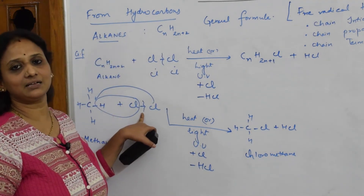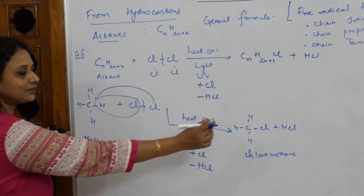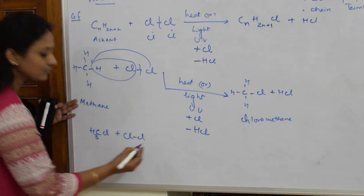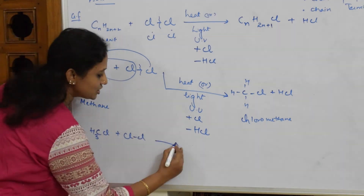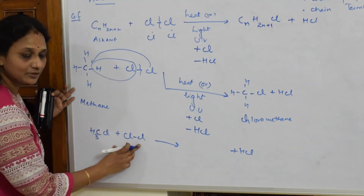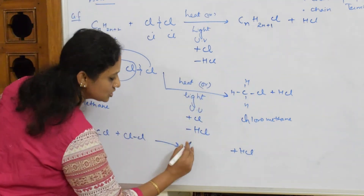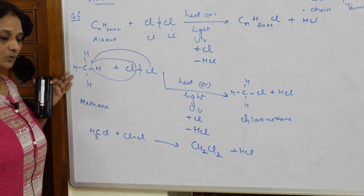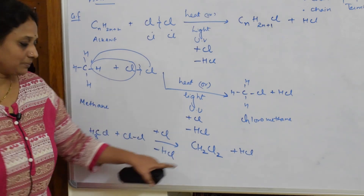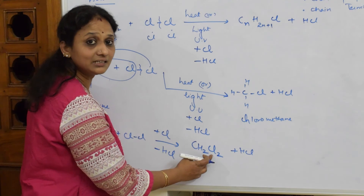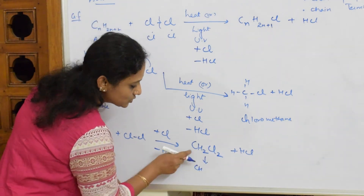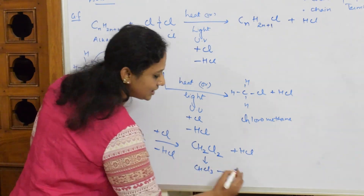Taking chloromethane CH₃Cl with another Cl₂, the process continues. Each time, Cl increases and hydrogen decreases because HCl keeps coming out. CH₃Cl becomes CH₂Cl₂ — one Cl added, one HCl removed. Then the next compound is CHCl₃, and finally CCl₄, which is complete halogenation.